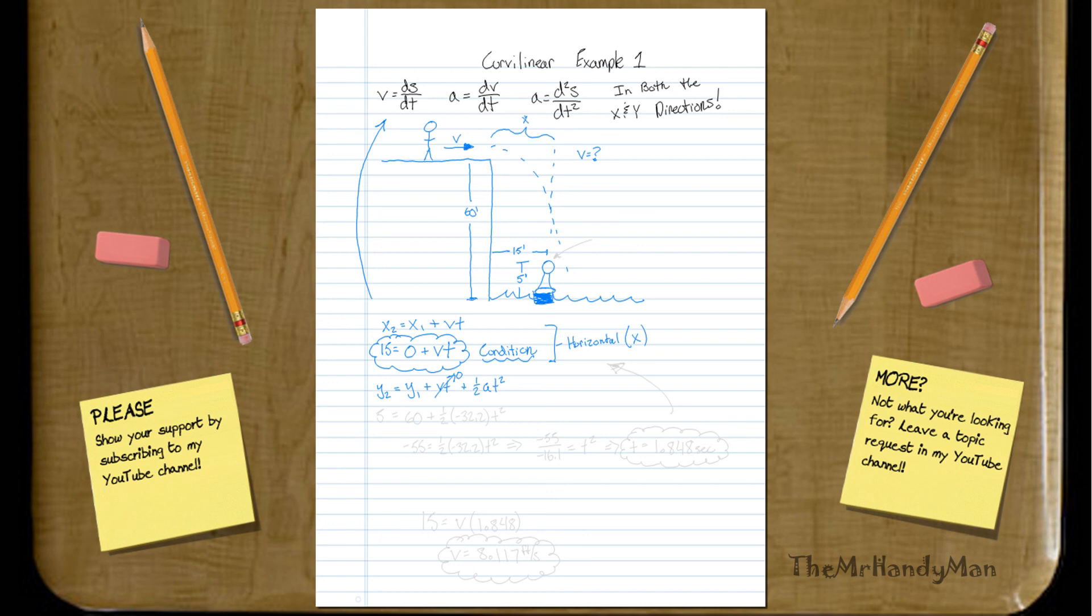And what we can do here is we know that our y2, when we get to this buoy part, so I'm just going to call this the minimal condition. So y2 would be five feet, because it's five feet high. The y1 is 60 feet, plus, that's zero, plus one-half A, which is negative 32.2, that's gravity, T squared.